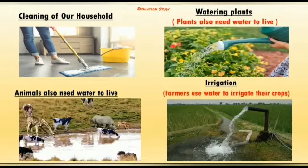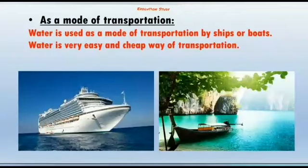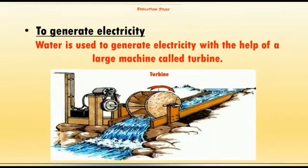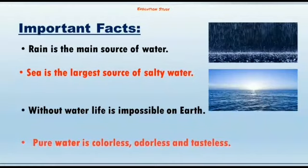Farmers use water to irrigate their crops. From household works to irrigation, we need water in every way. Water also plays a vital role as a mode of transportation — it is a very easy and cheap means. Water is also used to generate electricity with the help of a large machine called a turbine.